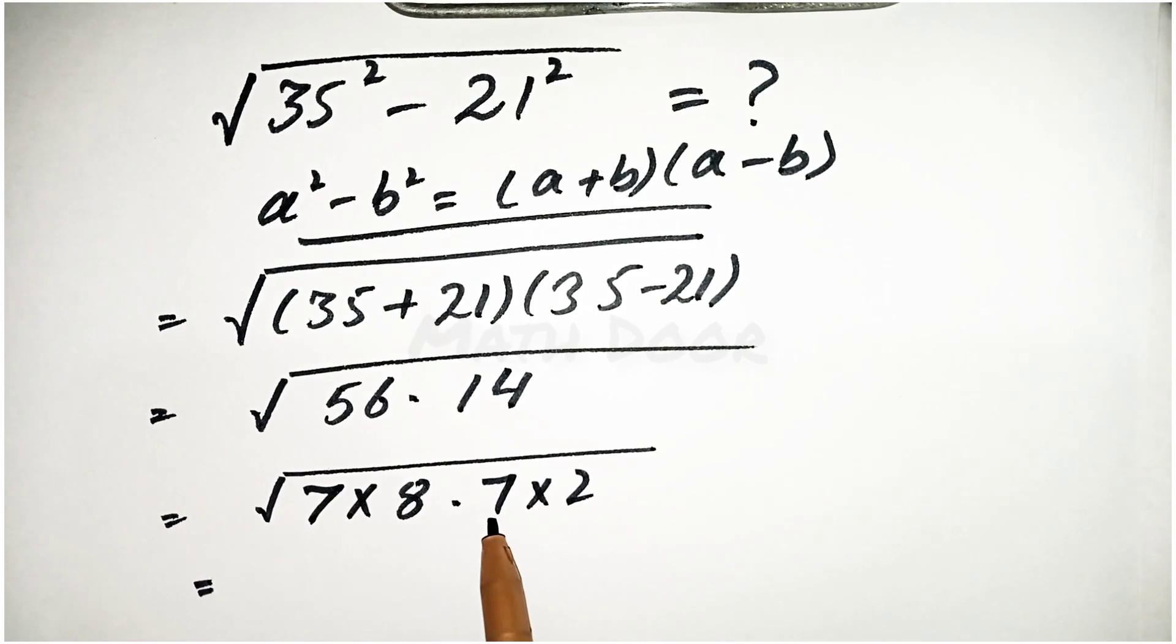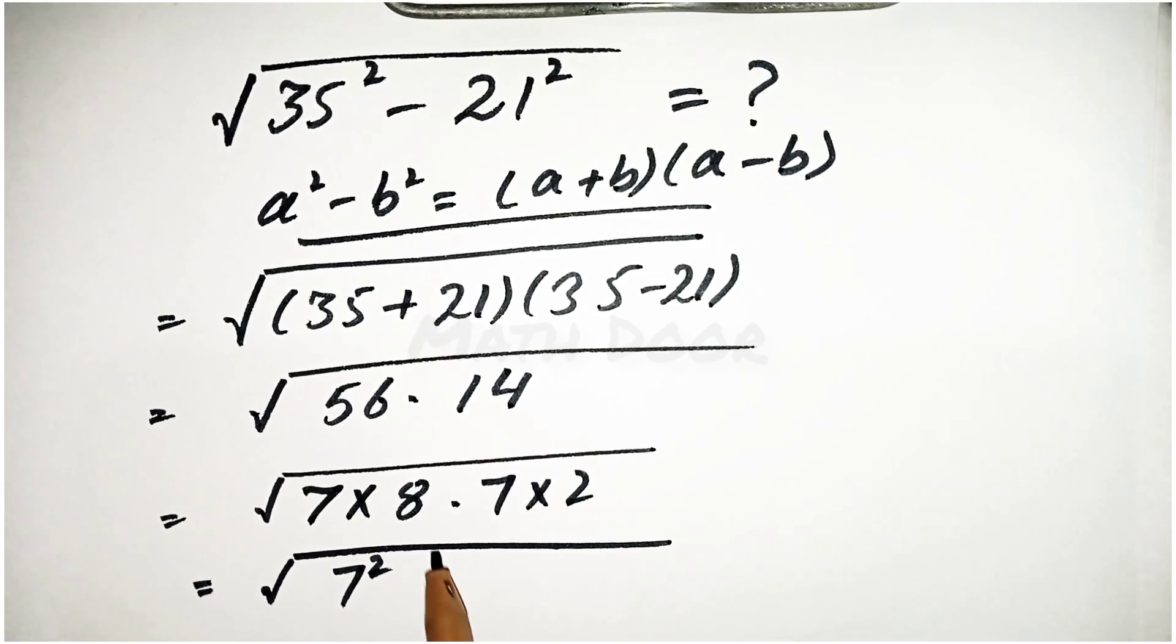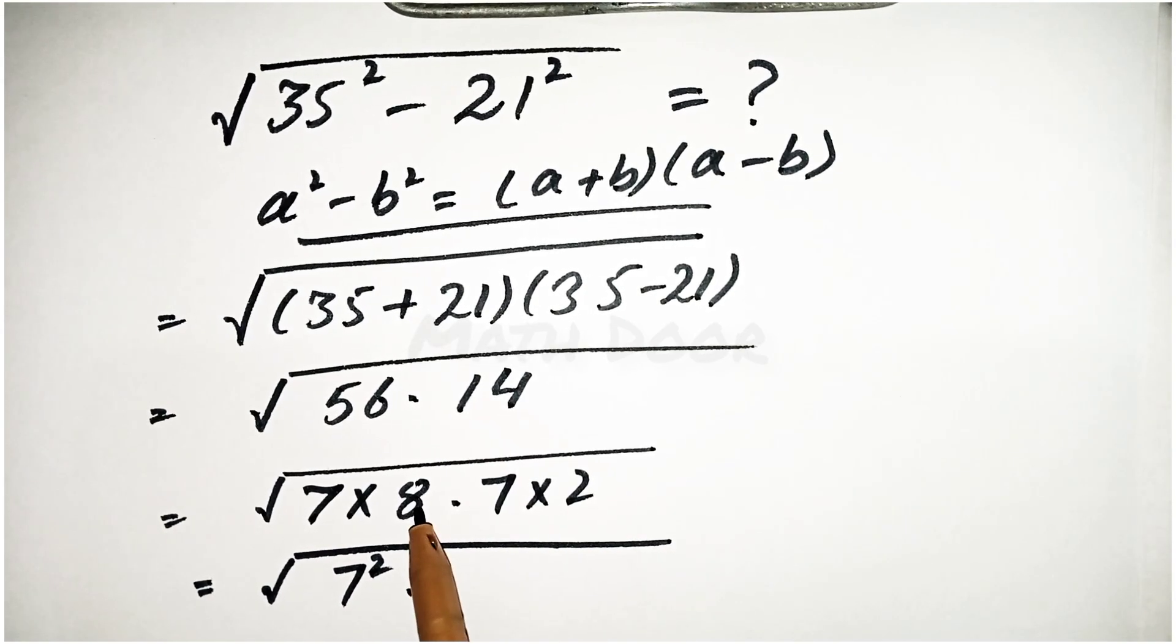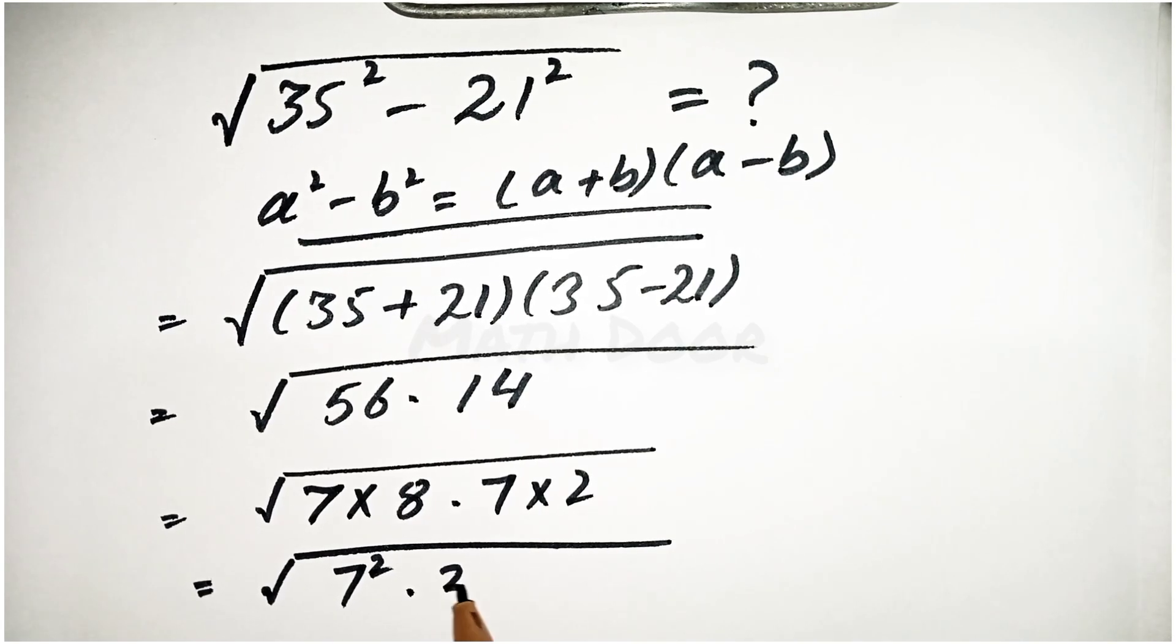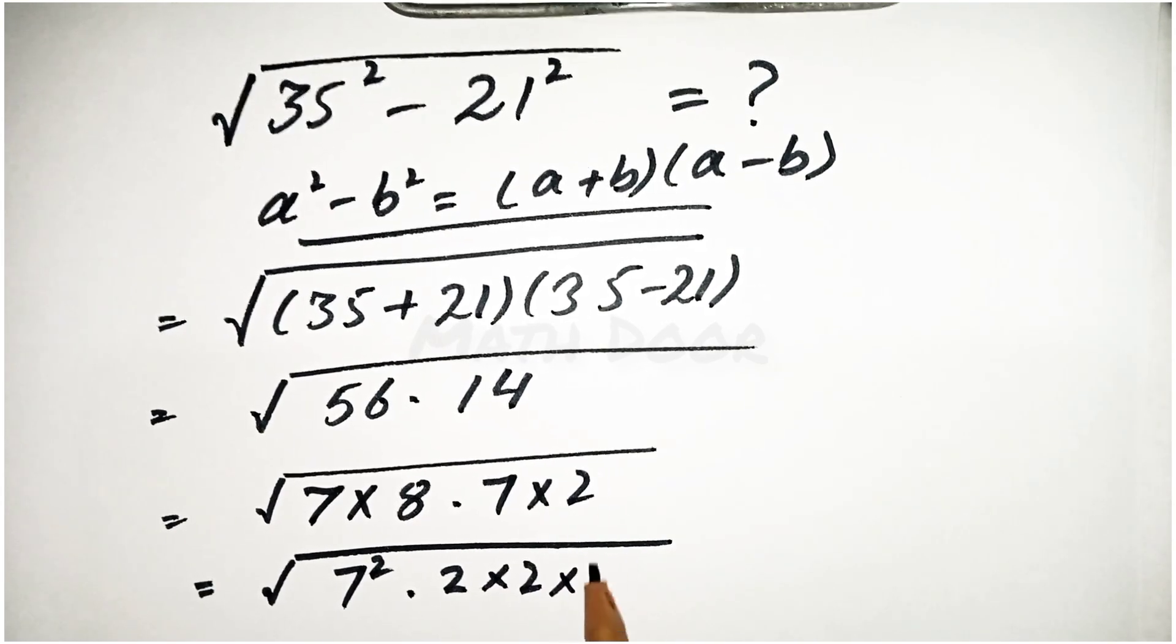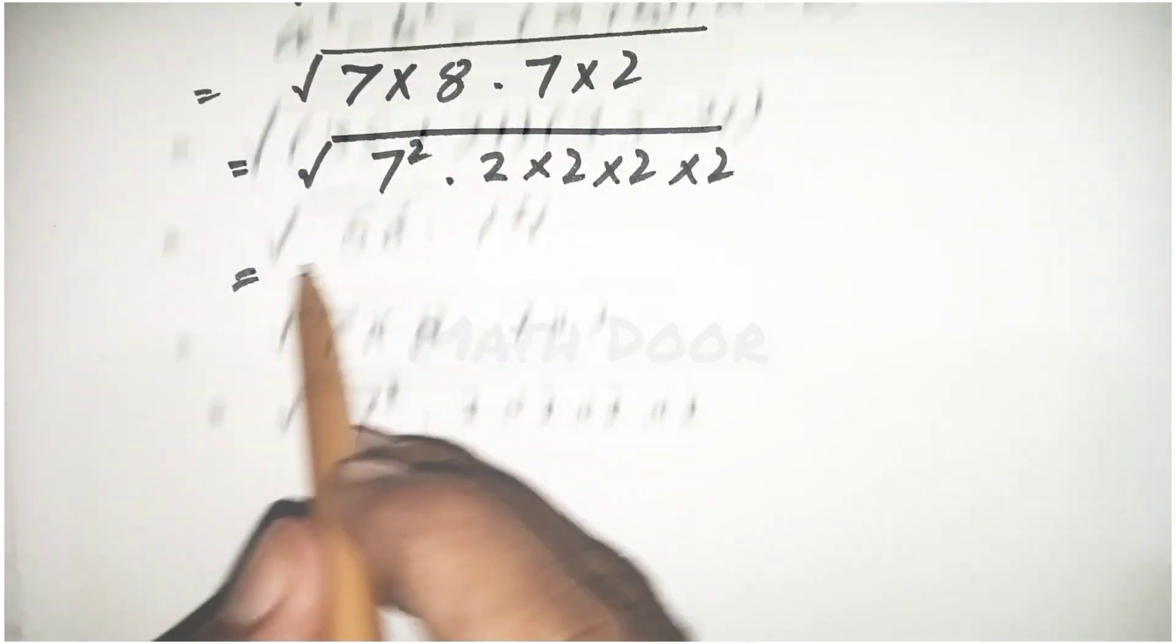Now, 7 × 7 becomes 7², and we will write this as 2 × 2 × 2.